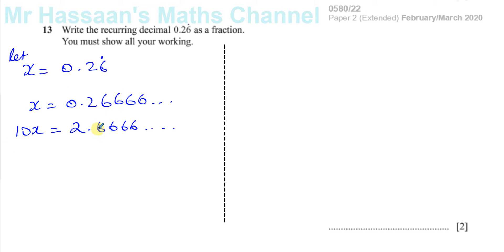And to have another expression, you could say multiply this original equation by 100, in which case you will get 26.6666. You'll have 100x equals 26.6666, whatever.